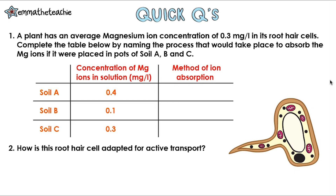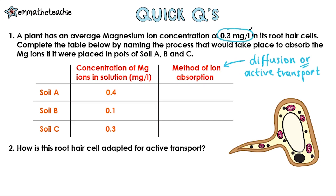Question 1: A plant has an average magnesium ion concentration of 0.3 mg per litre in its root hair cells. Complete the table below by naming the process that would take place to absorb the magnesium ions if it were placed in pots of soil A, B, and C. The method of ion absorption can only be diffusion or active transport — not osmosis, as we're not moving water. Soil A has 0.4 mg per litre, which is higher than 0.3, so moving from high to low is diffusion.